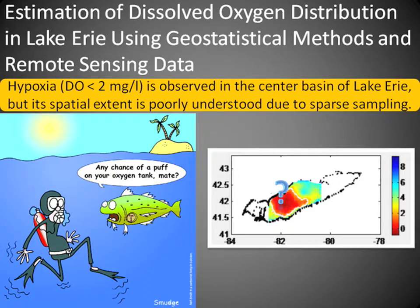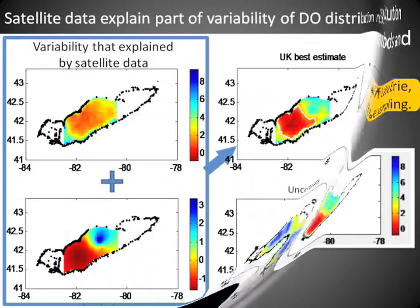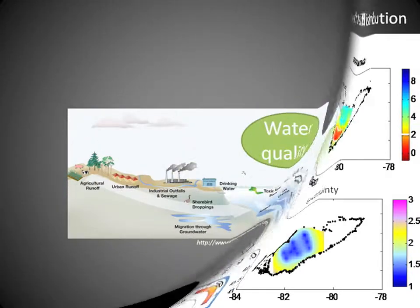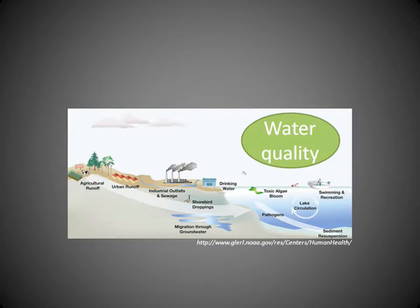Geostatistical methods provide two main tools for studying the extent of hypoxia. One, it allows for the development of reasonable spatial distribution of dissolved oxygen. And two, by looking at the different drivers of hypoxia, we can identify which factors play the most important role. Overall, geostatistical methods provide a means of assimilating multiple types of data in order to aid in the creation of a water quality forecasting framework.